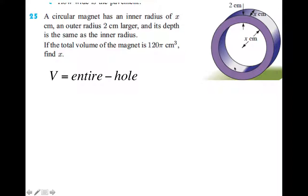So the volume of the magnet, the purple, is the volume of the entire cylinder minus this hole that's cut in the middle of it. So if you do the whole thing minus this hole, you'll be left with the purple bit. The entire thing minus the hole.